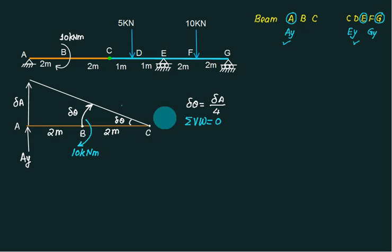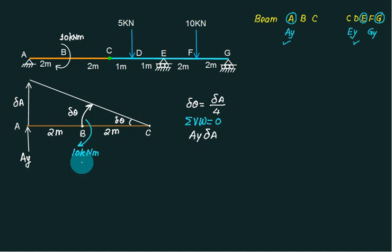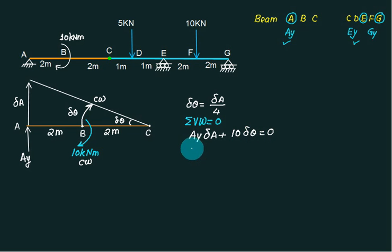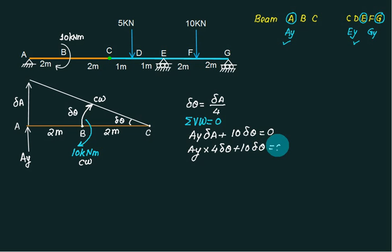Apply the principle of virtual work — total work done is 0. Ay into delta A, they are acting in the same direction, so this is a positive quantity. This one is clockwise and the moment is also clockwise, so clockwise-clockwise is positive, equal to 0. So Ay: delta A is 4 times del theta, plus 10 times del theta. Del theta cancels, so Ay equals minus 2.5.